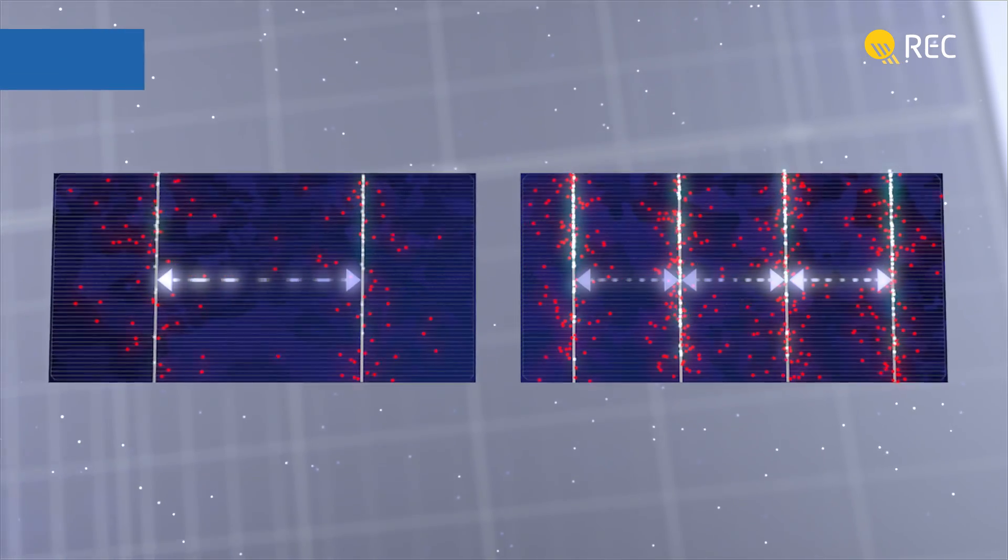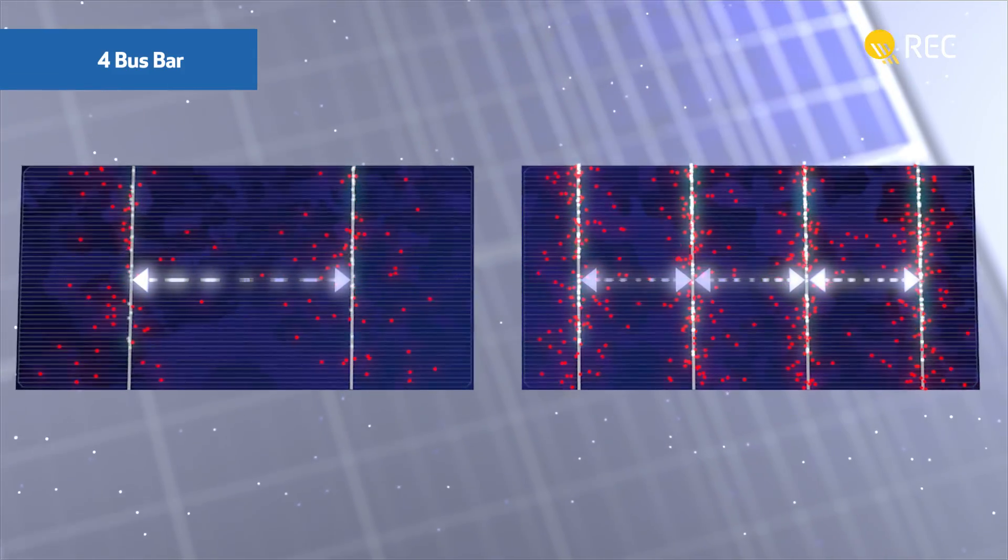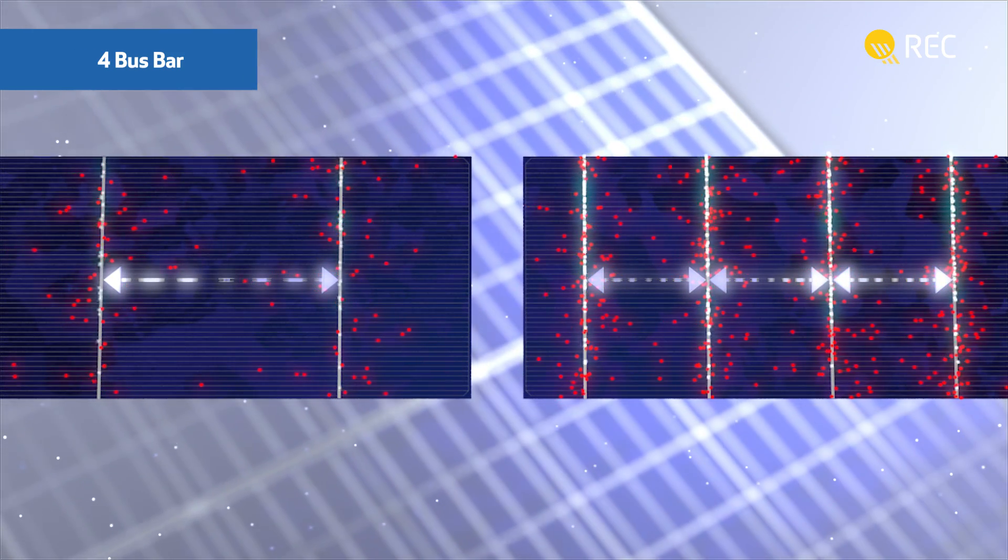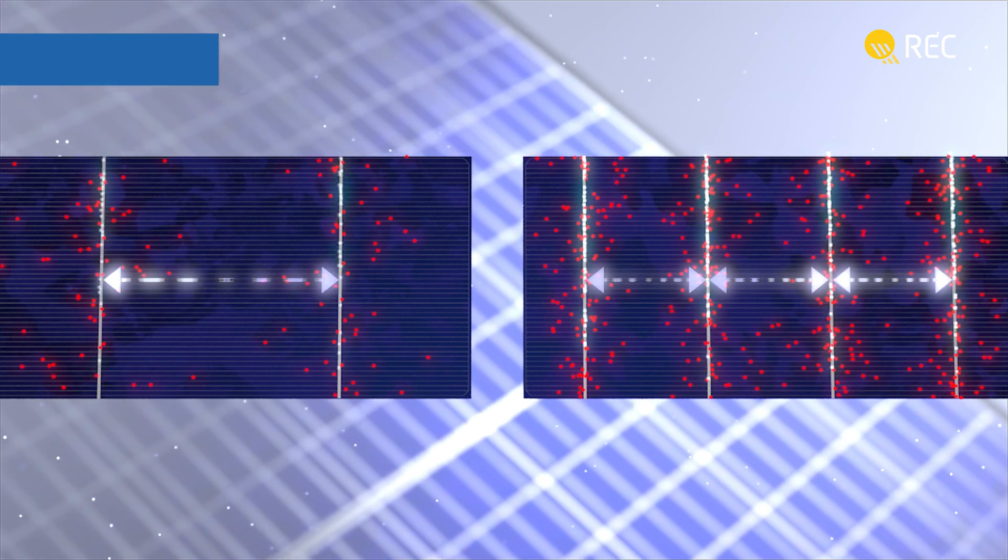Back on the surface, the REC Twin Peaks series has four bus bars on the cells. This means electrons have less far to travel to reach the ribbon, vastly improving the flow and the overall reliability of the panel.